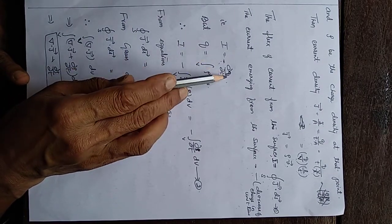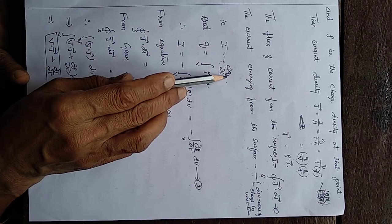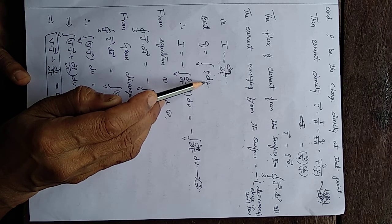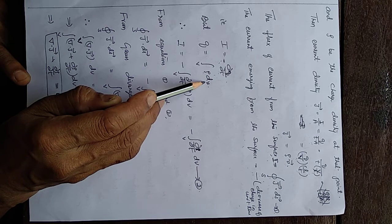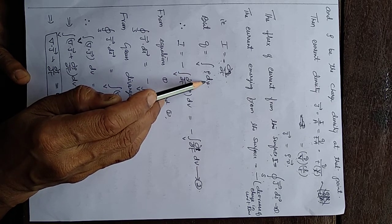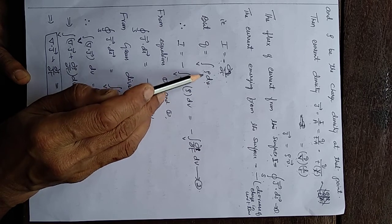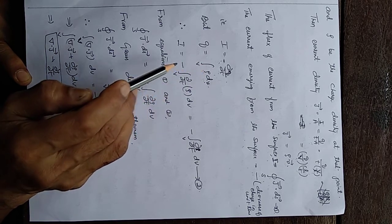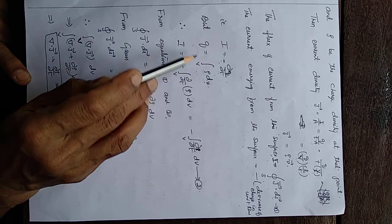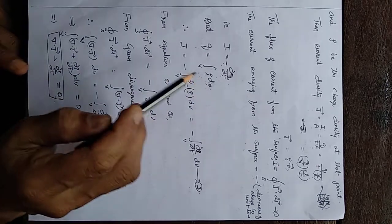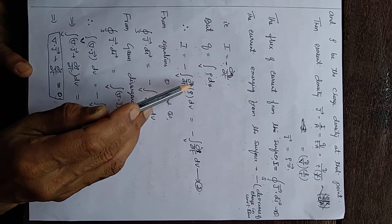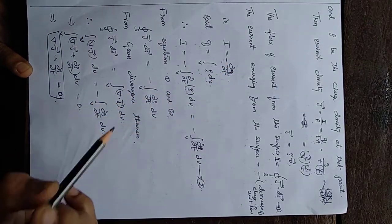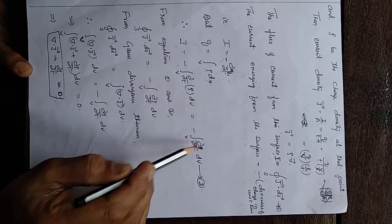Now, the total charge Q contained in the entire volume V is the volume integral: Q = ∫ρ dV, since ρ dV gives the charge in a small volume element dV. Therefore, substituting Q, we get I = −∫(∂ρ/∂t) dV. So we now have two expressions for I: the surface integral from equation 1, and the volume integral from equation 2.